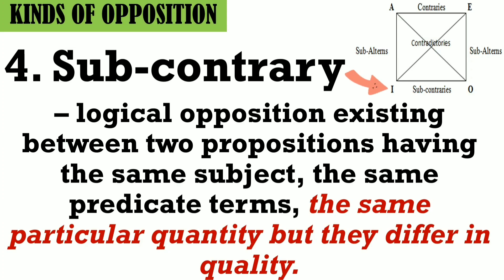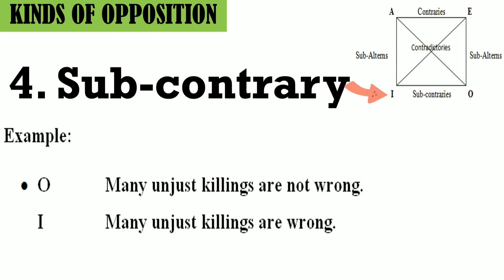Subcontraries: a logical opposition existing between two propositions having the same subject and predicate terms, the same particular quantity, but differing in quality. I and O are both particular, but O is negative and I is affirmative. Example: O — 'Many unjust killings are not wrong.' I — 'Many unjust killings are wrong.' Notice the negation in O and its absence in I.